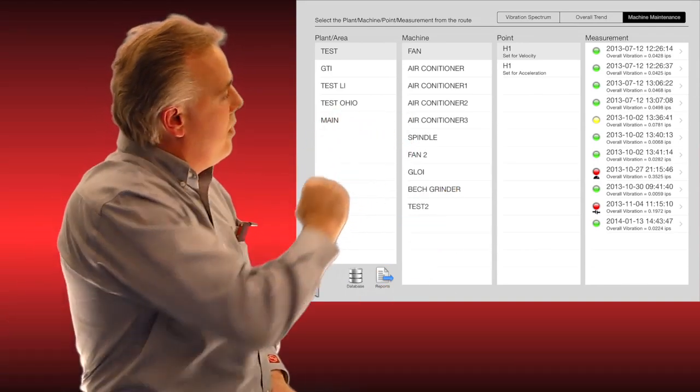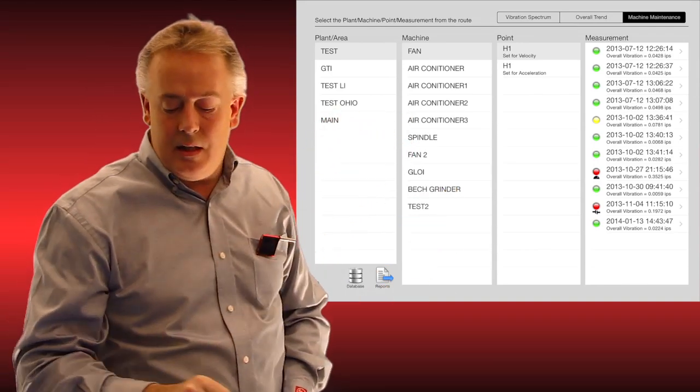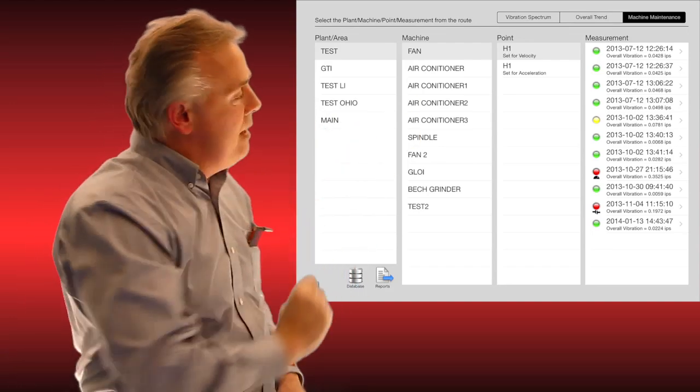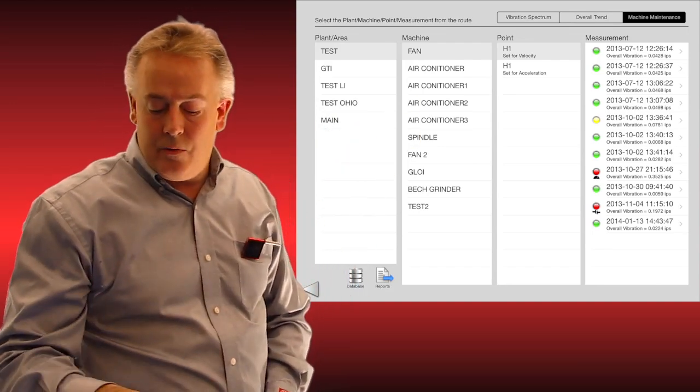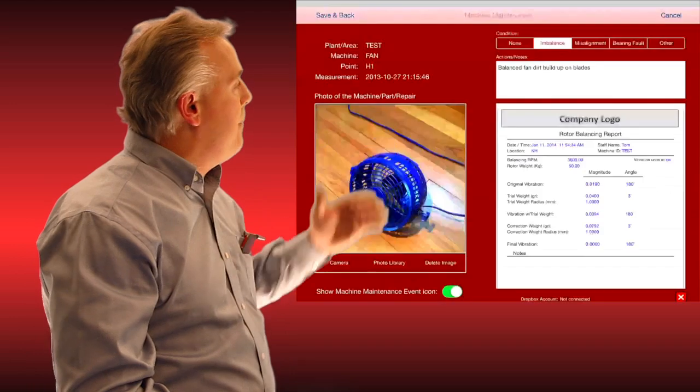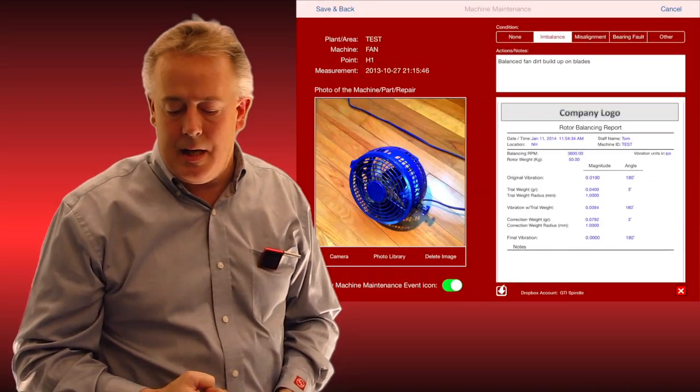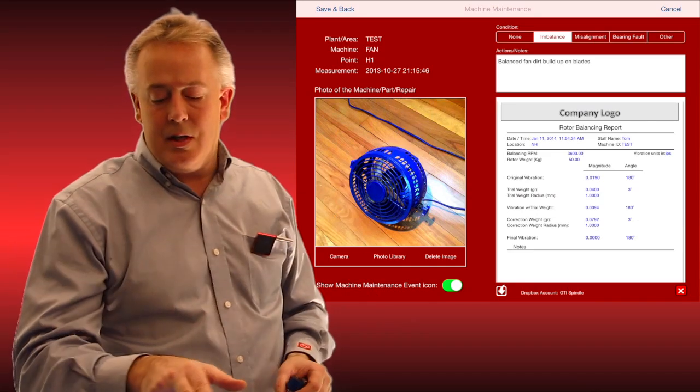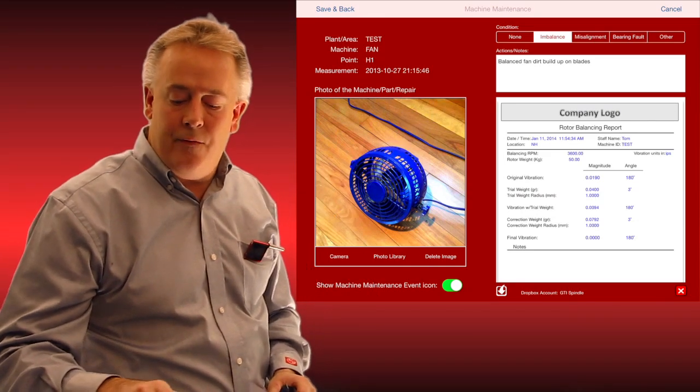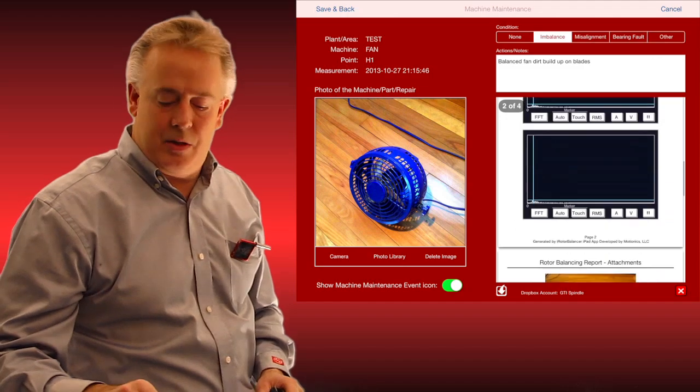You can see I still have that nice list with green, yellow, and red, but there's a couple of red ones where I've created a maintenance event. You see a little balancing icon or below it a little alignment icon. So if I click on that, I can actually view that particular maintenance event. At that point, that means I balanced that asset point. You can see a picture of the fan there, you can see some notes that I made, and you can see the full balancing report that I'm scrolling through right on your maintenance event.